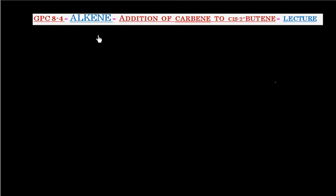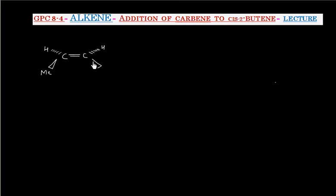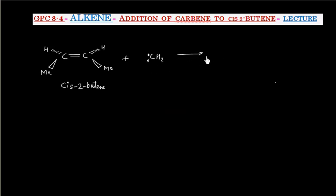In this lecture, we will discuss the addition of carbene to cis-2-butene. Let us say we have cis-2-butene and we have to add carbene. Carbene is CH2 double dot. We are interested in what will be the product in this case.